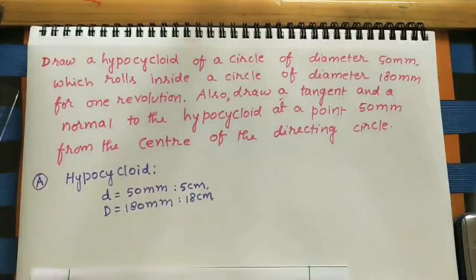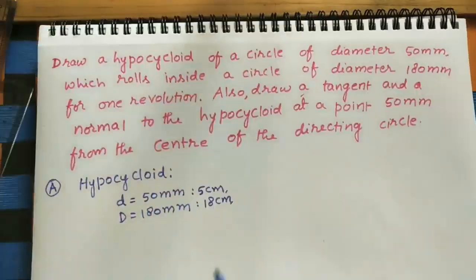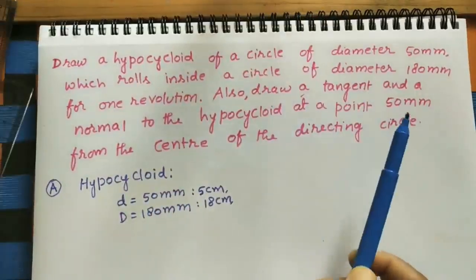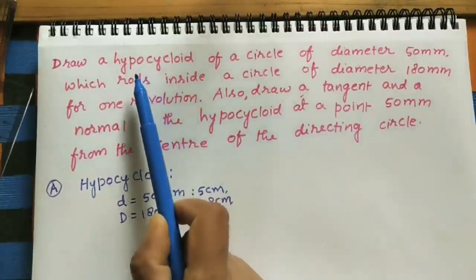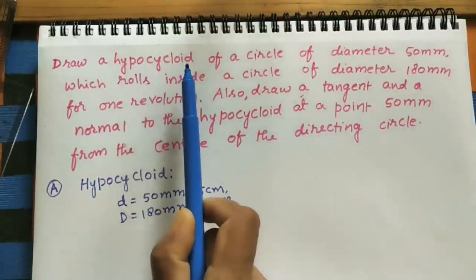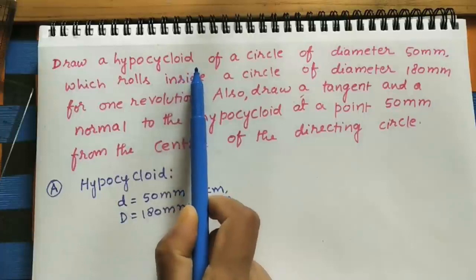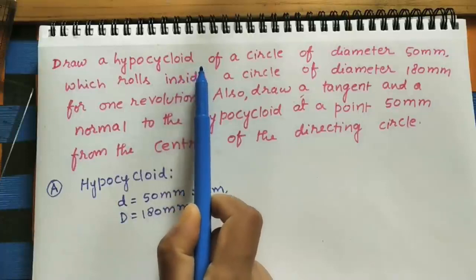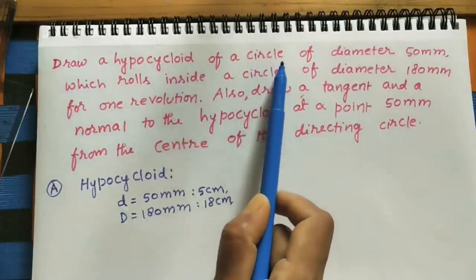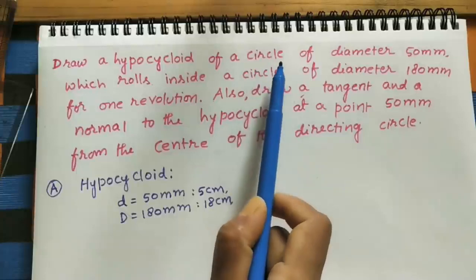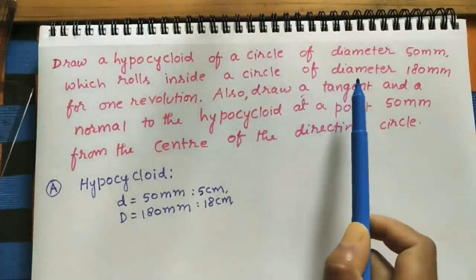Hi to all. Today we will discuss how to draw a hypocycloid. I took one textbook question. First, let us understand what a hypocycloid is. A hypocycloid is the path of one point P, which is on the circumference of a smaller circle, when this smaller circle is rotating inside a bigger circle.